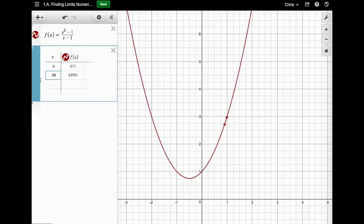So we're getting closer to a certain value, but we're going to need to notice this trend. So let's put 0.999. And as you can see, we're getting closer and closer to what looks like three.